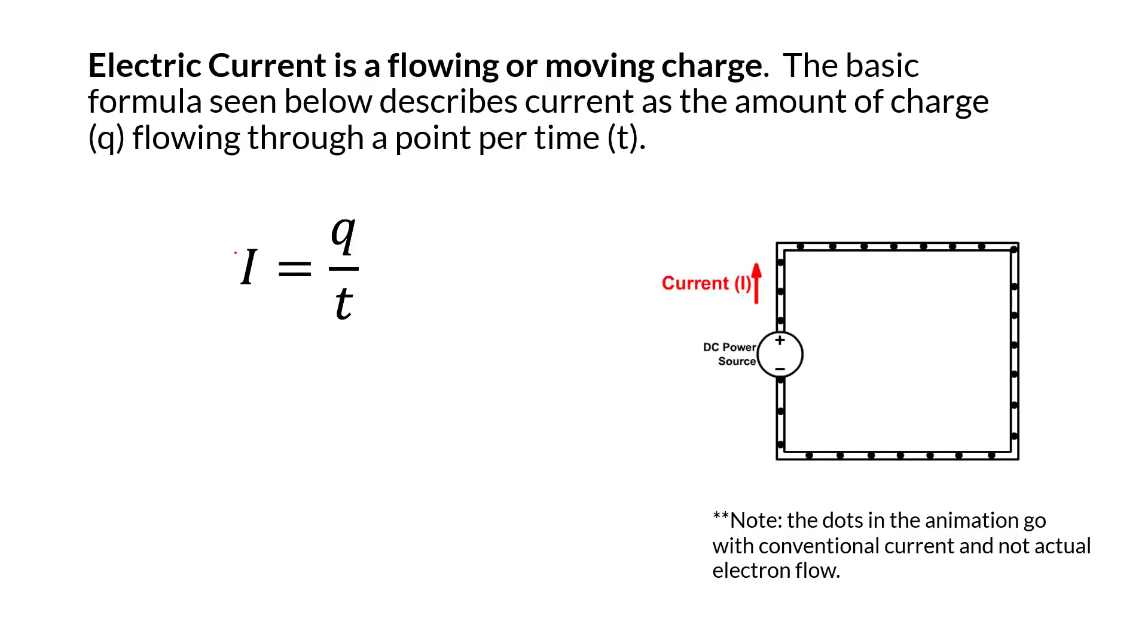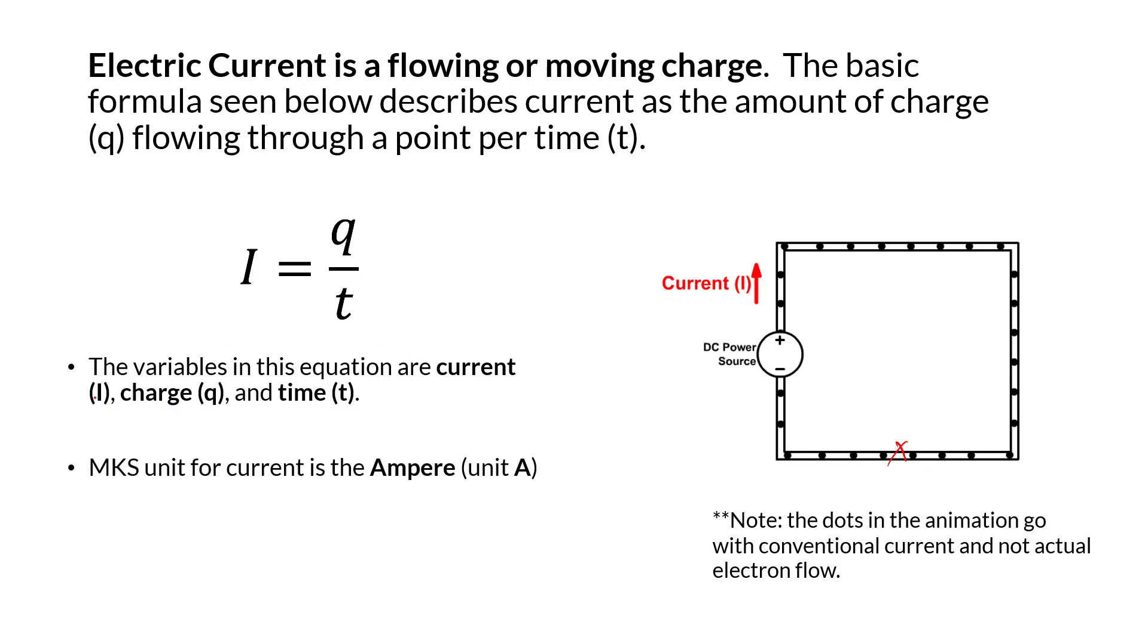Just a reminder about current. Current is the amount of charge that's going to go through a spot, like this spot right here, per second. Some of the variables we'll use: the variable I for current, Q for charge, T for time. The MKS unit for current is ampere from a previous lesson. And the ampere just means that one coulomb of charge transfers every second.